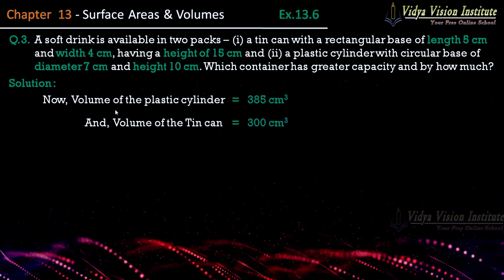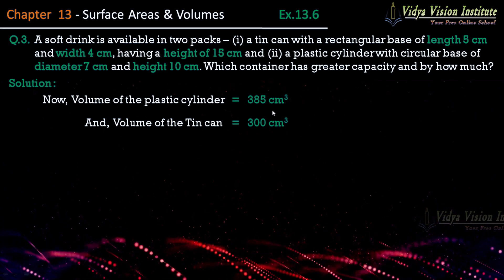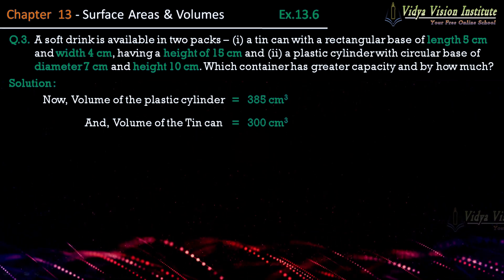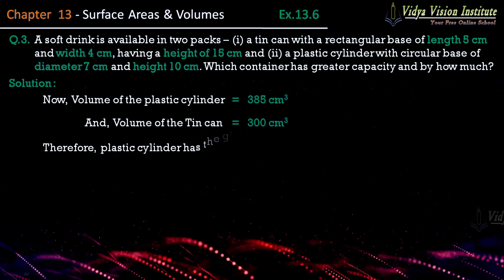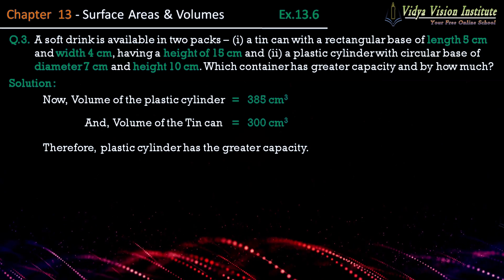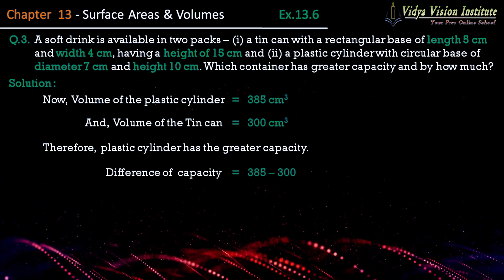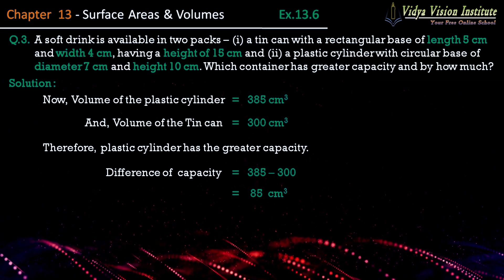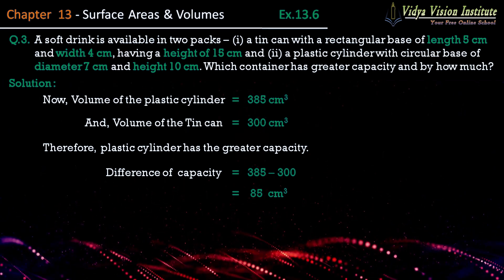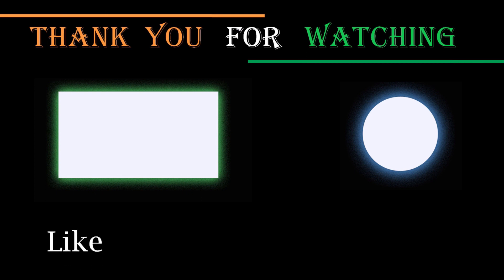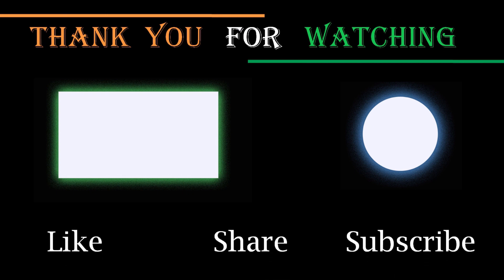आप देख सकते हैं कि plastic cylinder का volume ज्यादा है। Therefore, plastic cylinder has greater capacity. और क्या difference है वो भी निकाल लेते हैं — difference = 385 − 300 = 85 cm³.